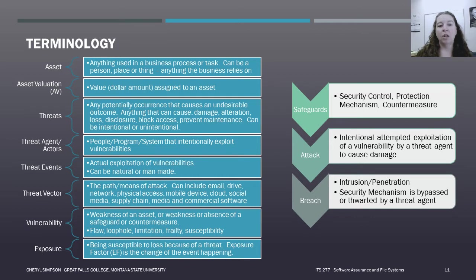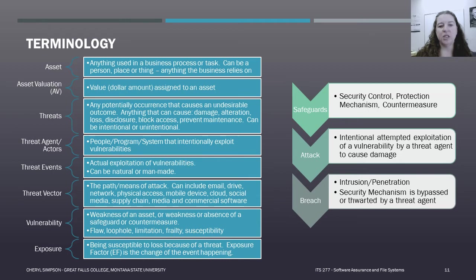A vulnerability is a weakness of an asset — the weakness or absence of a safeguard or countermeasure. It is essentially a flaw, loophole, limitation, frailty, or susceptibility of the asset. For example, having a building and leaving the door unlocked is a vulnerability. Exposure is the act of being susceptible to a loss because of a threat — essentially the chance that an event is going to happen.